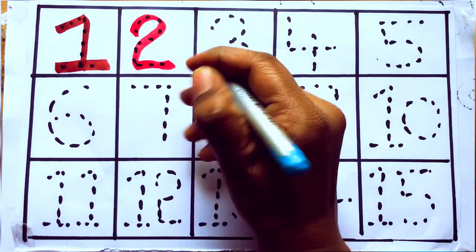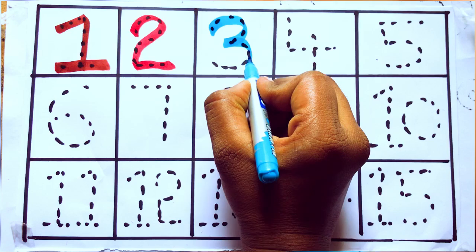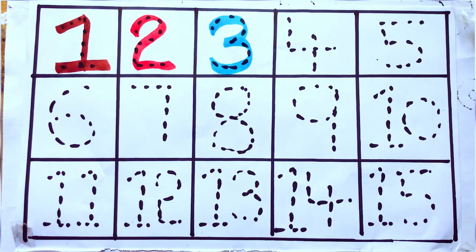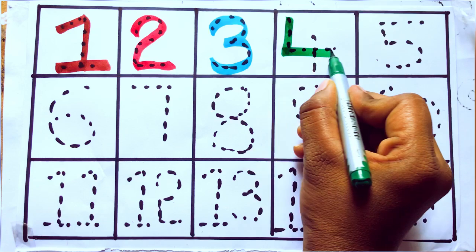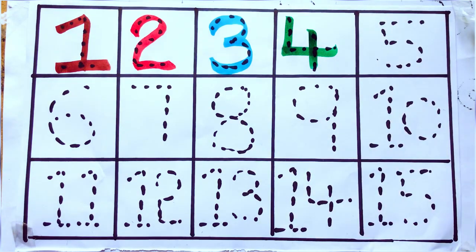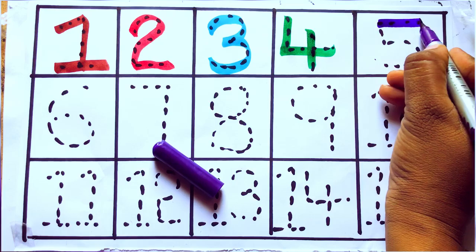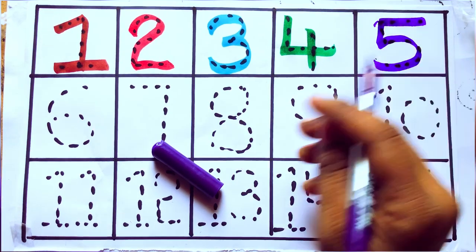Three, T-H-R-E-E, three. Green color, four, F-O-U-R, four. Violet color, five, five, F-I-V-E, five.